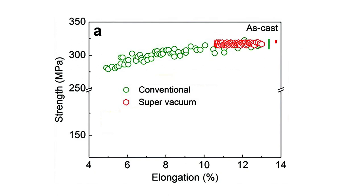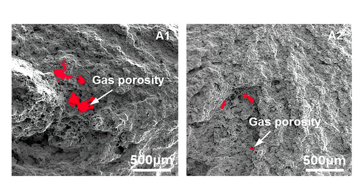Meanwhile, the consistency of strength improved by 86%. This means that not only is the vacuum cast aluminum stronger with better elongation characteristics, engineers can have more confidence that the parts will perform as expected. This allows engineers to design thinner parts and/or reduce scrap. Is Tesla using super vacuum? Yes, it appears so — I'll explain why later in the video.